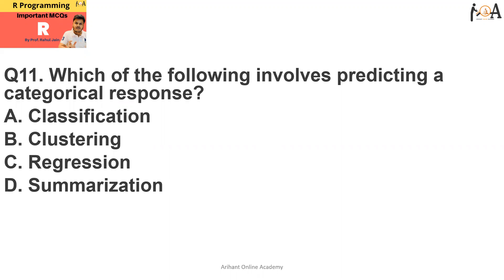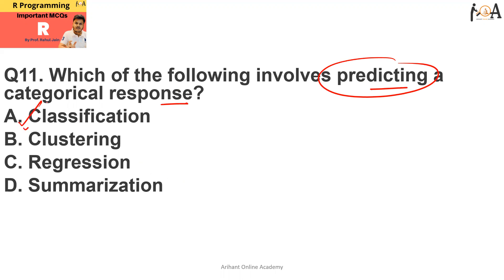Let's start. Question number 11: which of the following involves predicting a categorical response? Options are: A) classification, B) regression, or C) summarization. Classification techniques are used for predicting a categorical response, so option A is the correct answer.